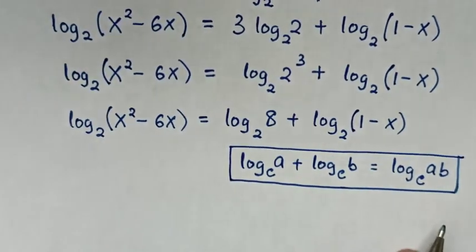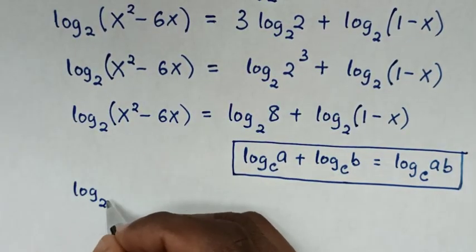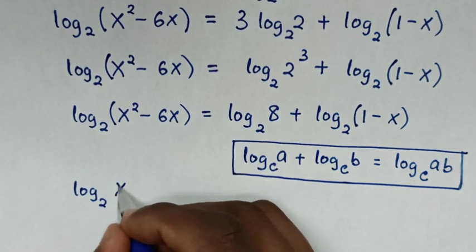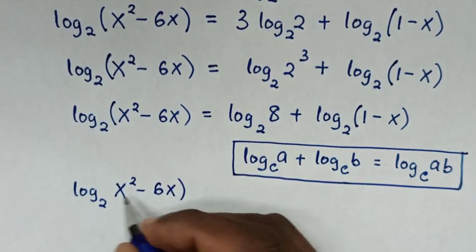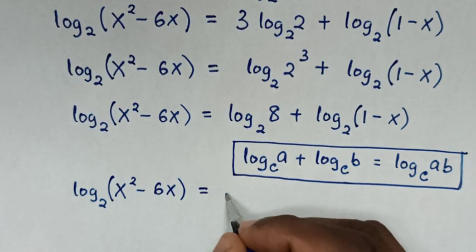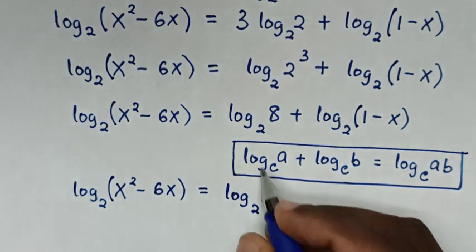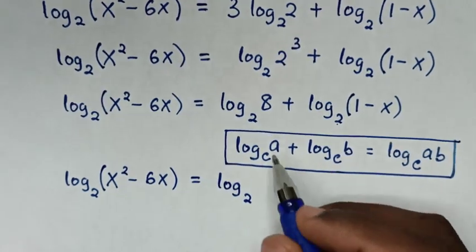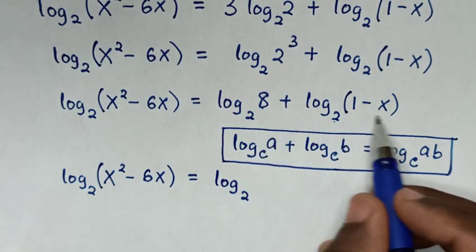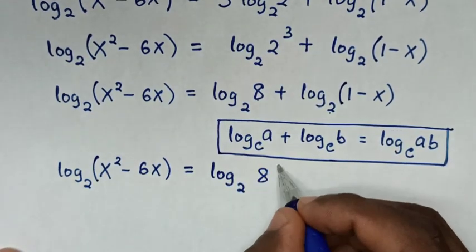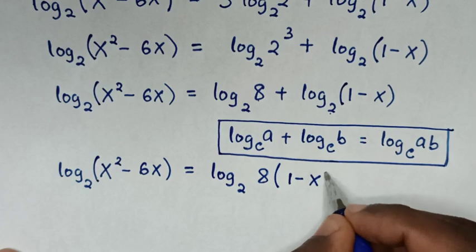So our equation will be log base 2 of (x² - 6x) equals log base 2 of 8 × (1 - x), which is log base 2 of 8(1 - x).